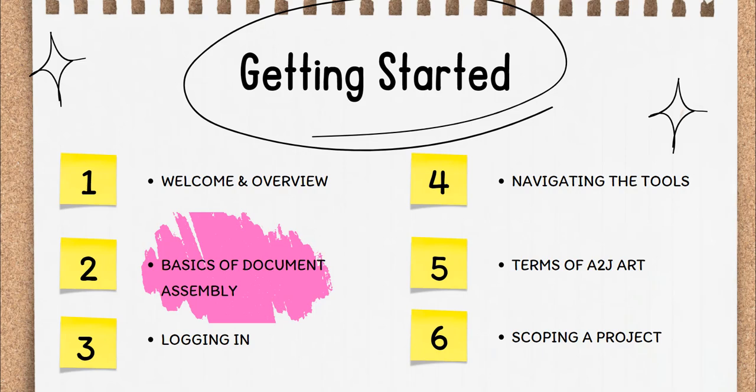What does document assembly mean at a high level, and how do you actually turn a paper form into an automated form?